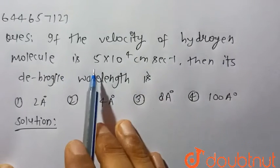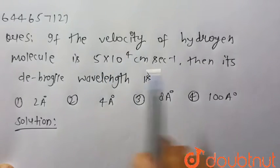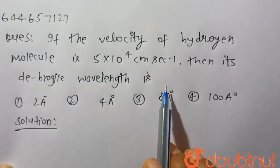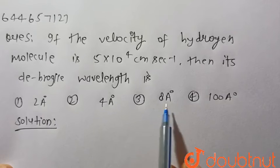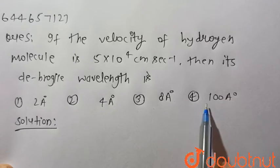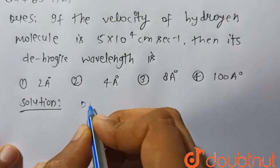If the velocity of hydrogen molecule is 5 × 10^4 centimeter per second, then its de Broglie wavelength is - these four options are given: first one is 2 angstrom, second is 4 angstrom, third is 8 angstrom, and fourth is 100 angstrom.